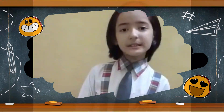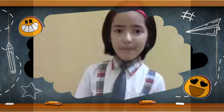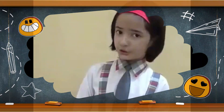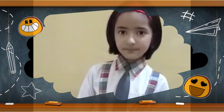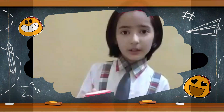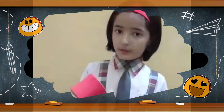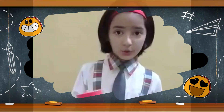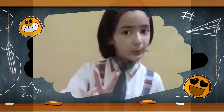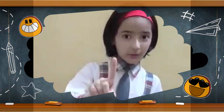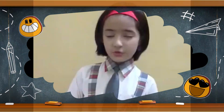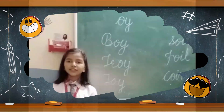Solids have a definite shape. Their particles are tightly arranged. A solid does not change its shape easily — it requires a lot of force to change its shape. This is an example of a hard solid. There are two types of solid: hard solid and soft solid. Hard solid cannot change its shape easily.